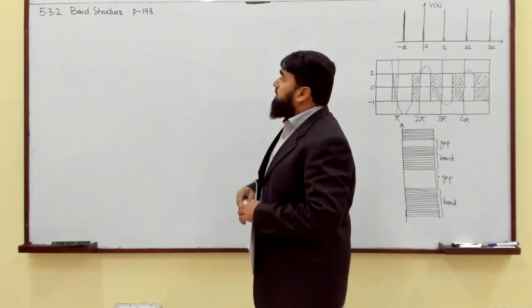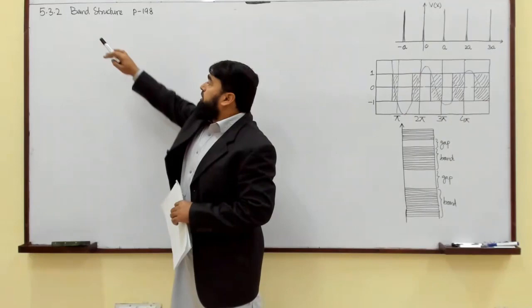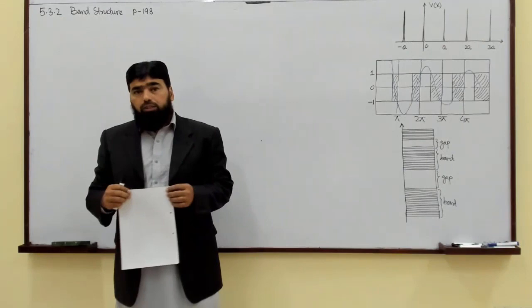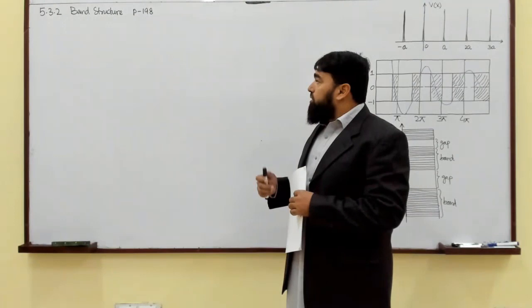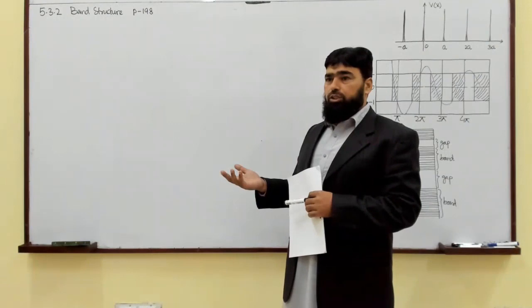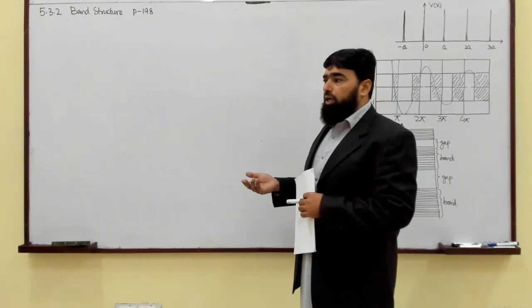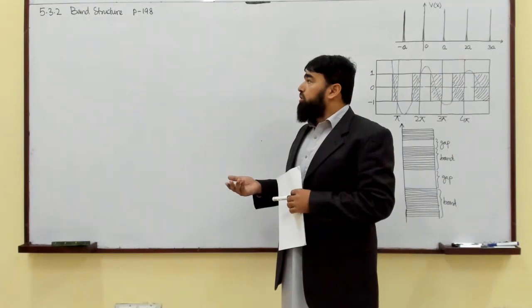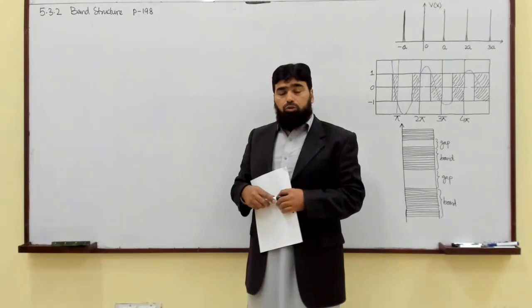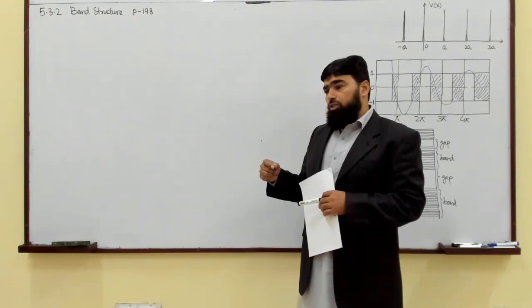In today's quantum mechanics class we will discuss the band structure. This is topic 5.32 and it is on page 198. In the previous lecture we discussed the free electron gas model, where electrons were free under no potential. We can approximate that configuration to metals, in which there is a sea of free electrons experiencing almost negligible potential.